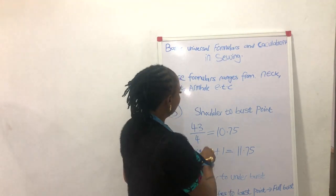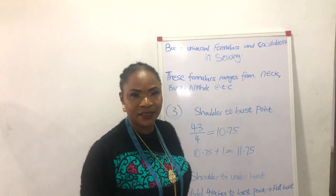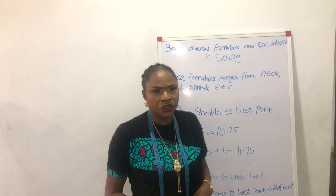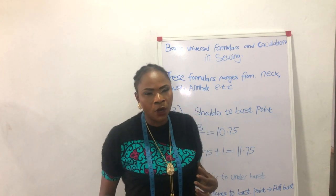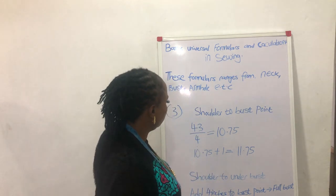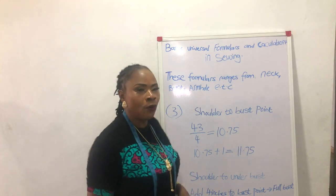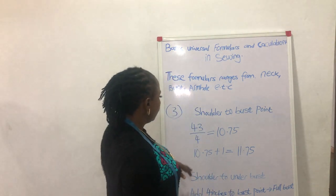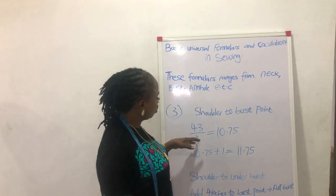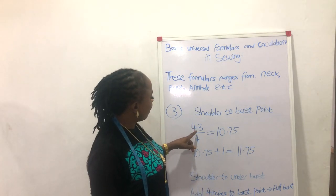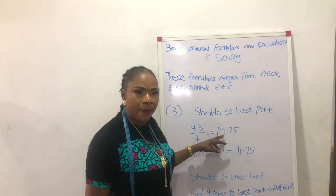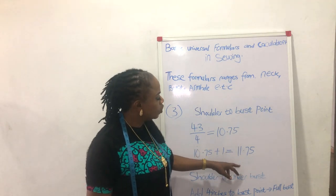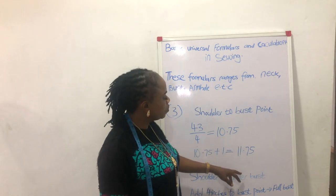Formula number three: shoulder to bust point. Most times we don't even measure it, especially when the person is not available. To get the shoulder to bust point, all you need to do is divide the bust by 4 plus 1, and it will give you the bust point — that is from the higher shoulder to your bust point. Using my measurement: 43 divided by 4 gives 10.75, plus 1 gives 11.75. On the conversion table this is 11 and 6/8, which is 11 and three-quarters.